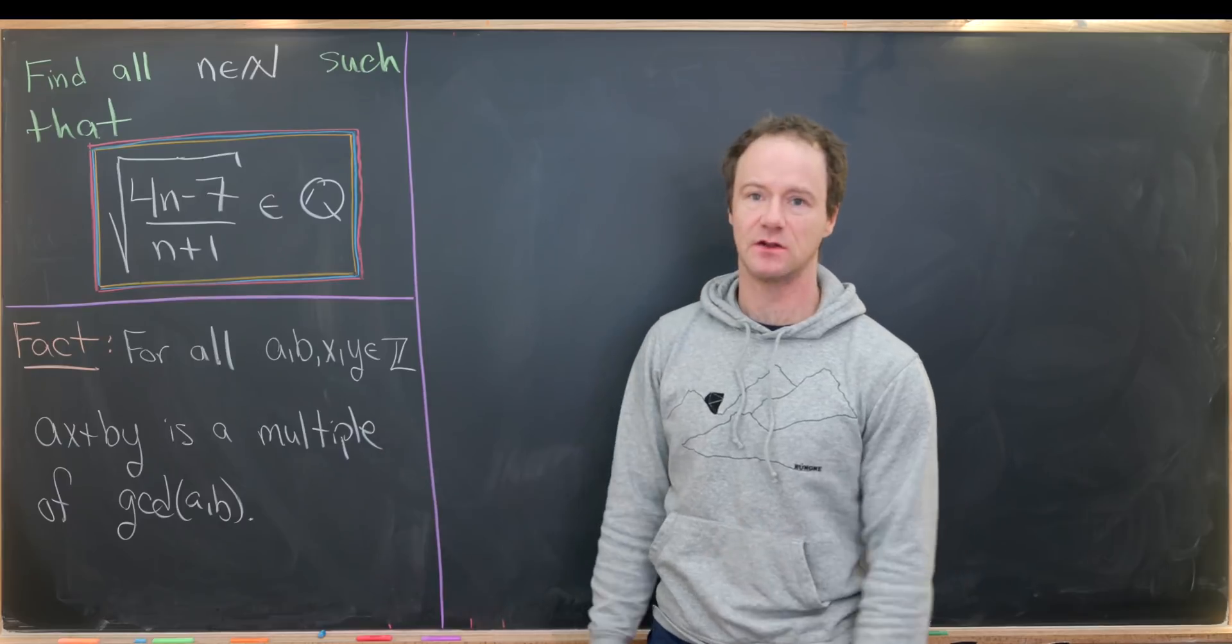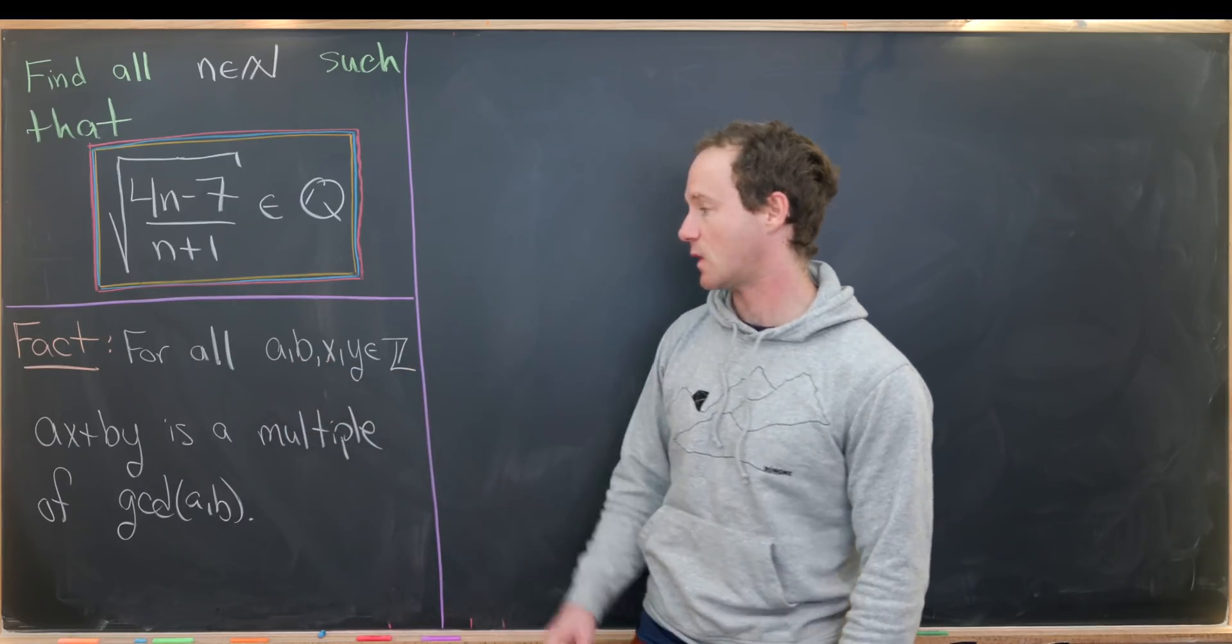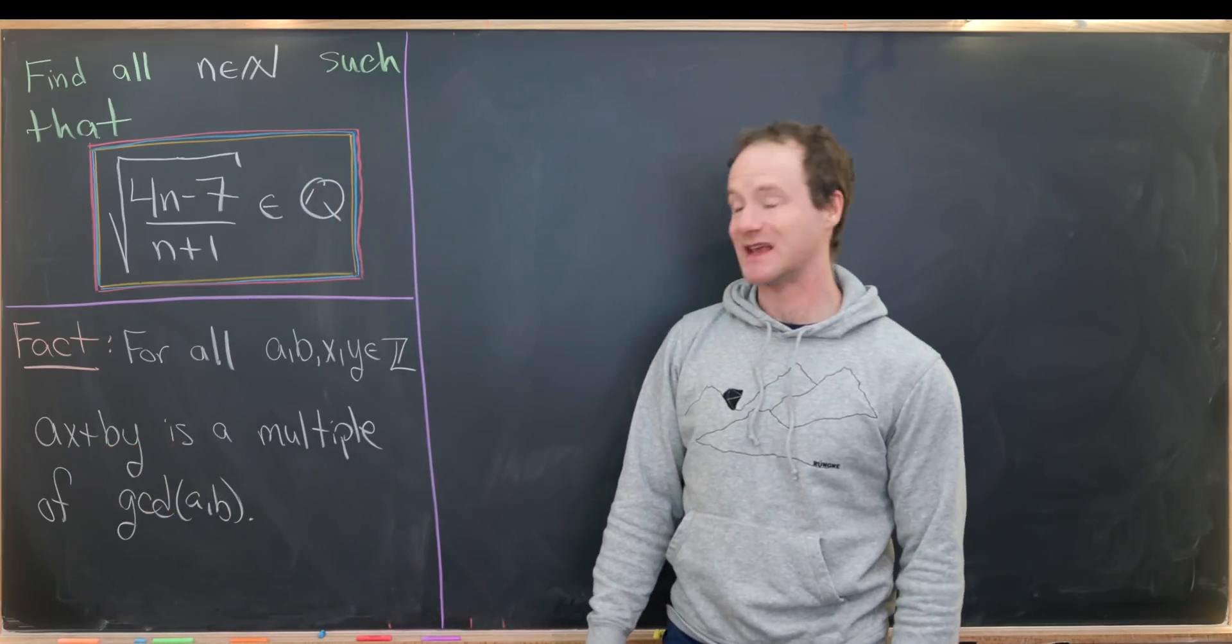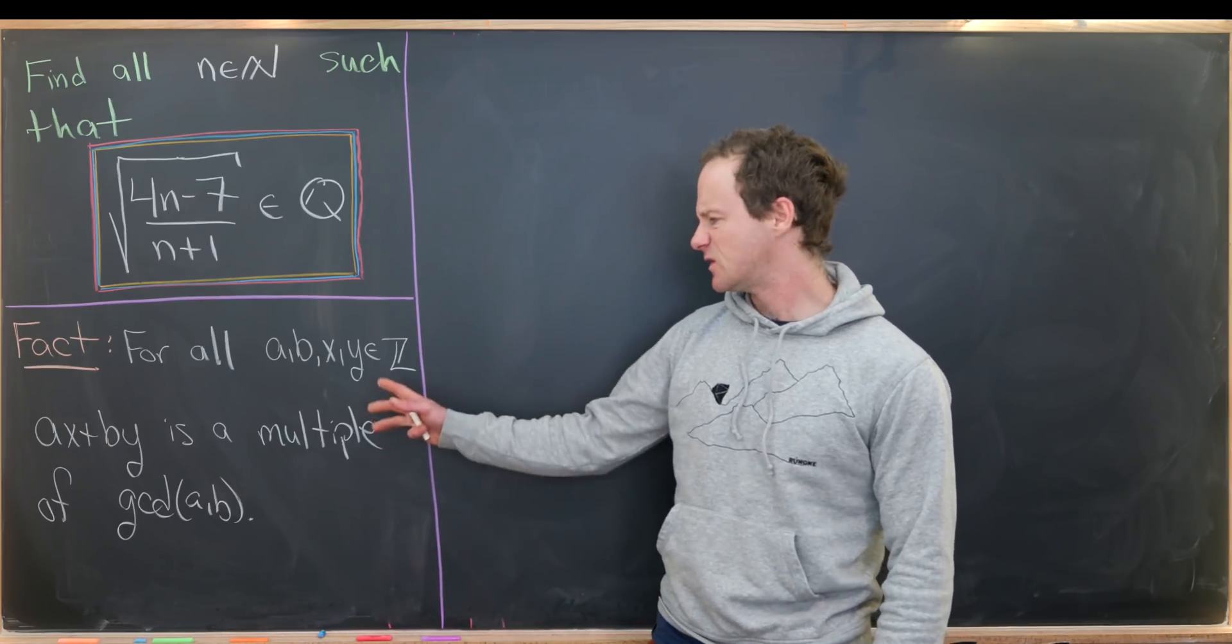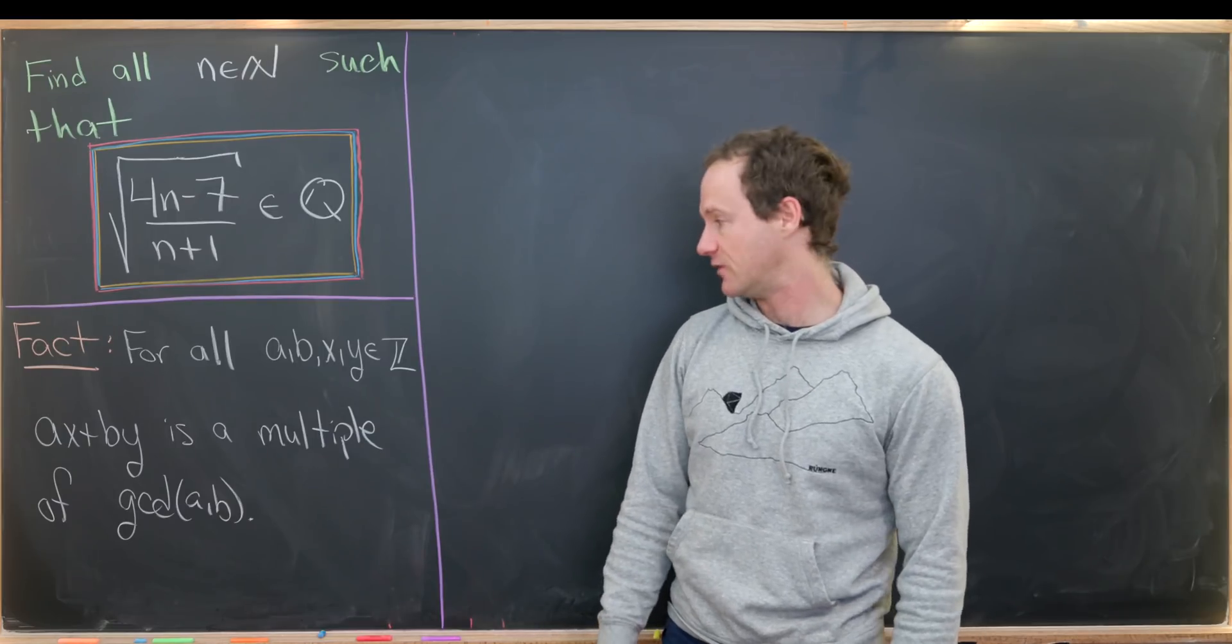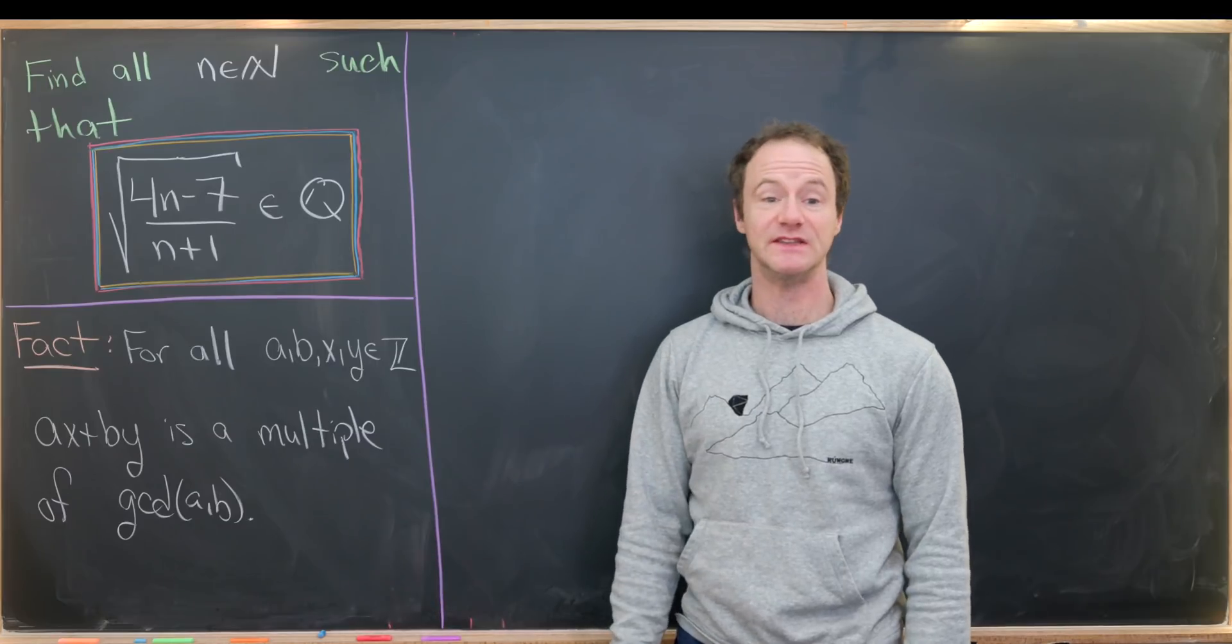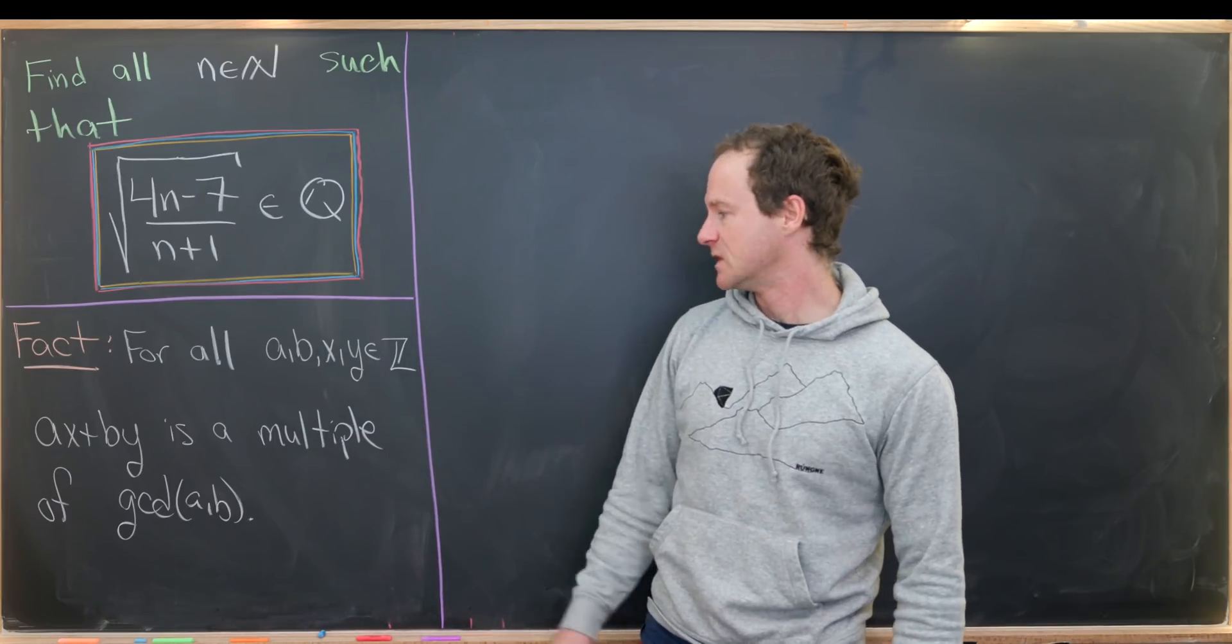We're going to use the following fact along the way: for all integers a, b, x, y, the object ax + by is a multiple of gcd(a,b). This can be found in maybe a standard number theory course. I've got a whole playlist covering number theory if you guys are interested. This is related to something called Bezout's identity.